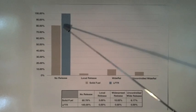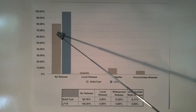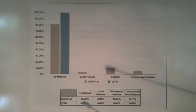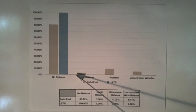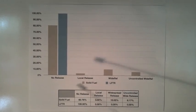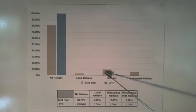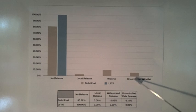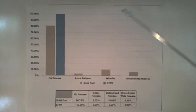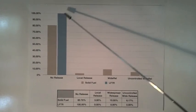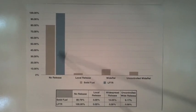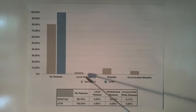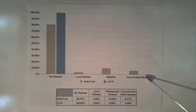Notice that the solid fuel reactor has an 80% chance of no release. Other probabilities include local release 3%, widespread release 10%, and uncontrolled wide release 6%. Now notice that the lifter has a 100% chance of no release and a 0% chance of any of the other probabilities.